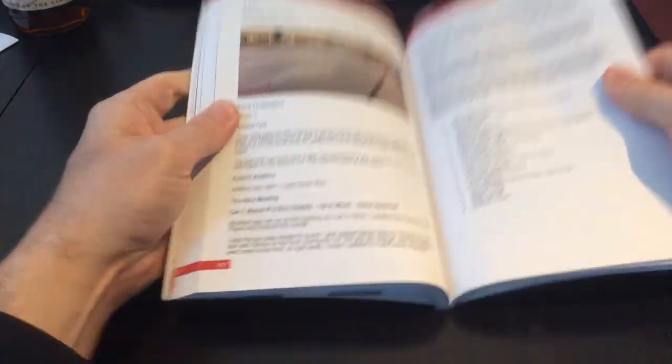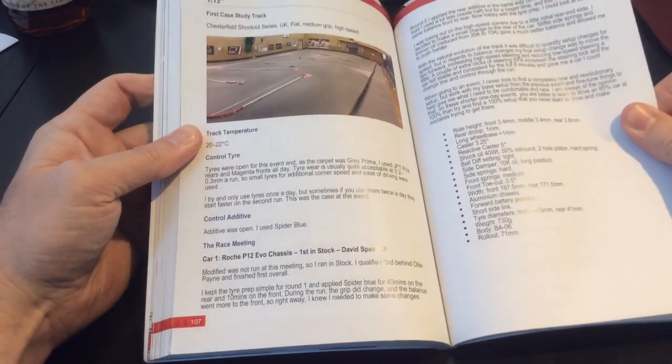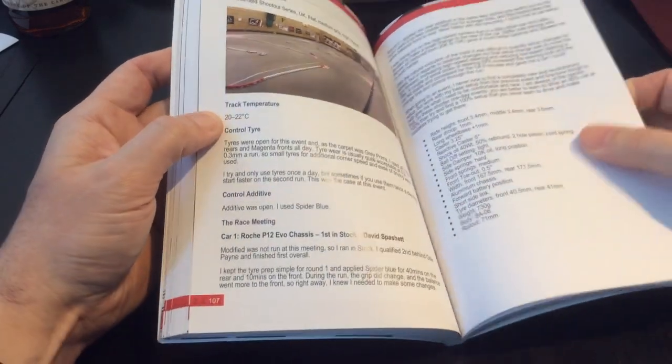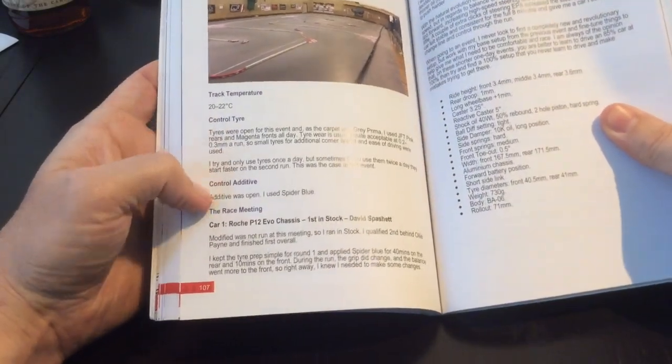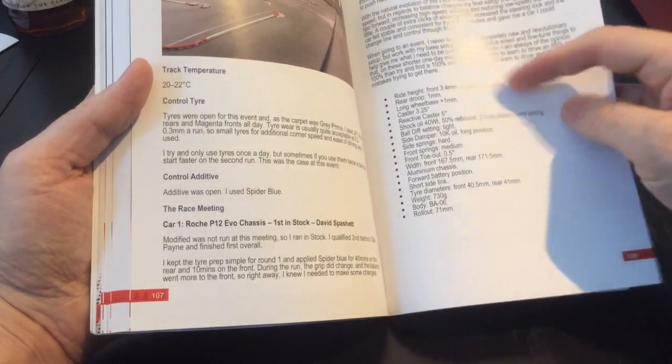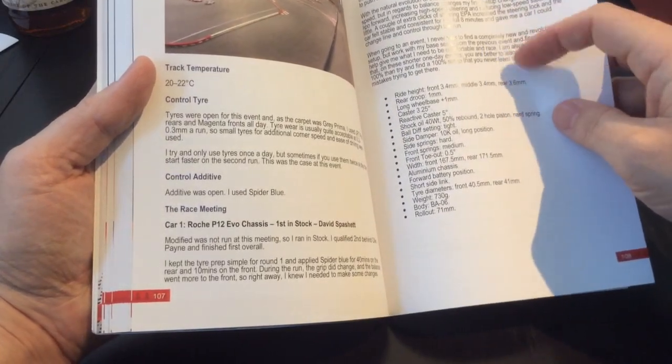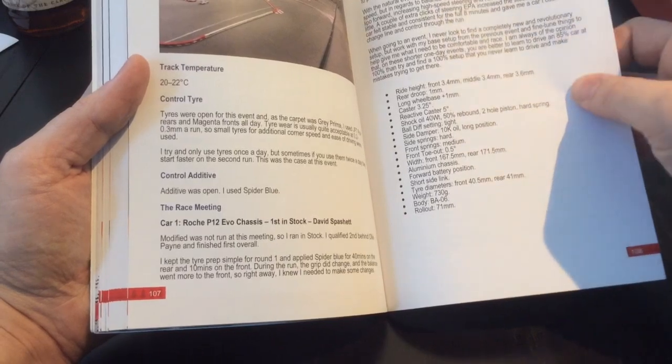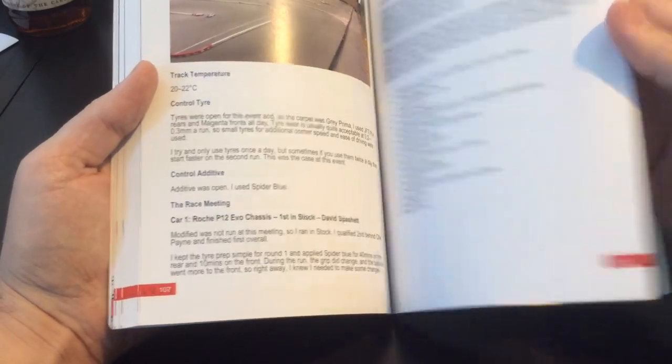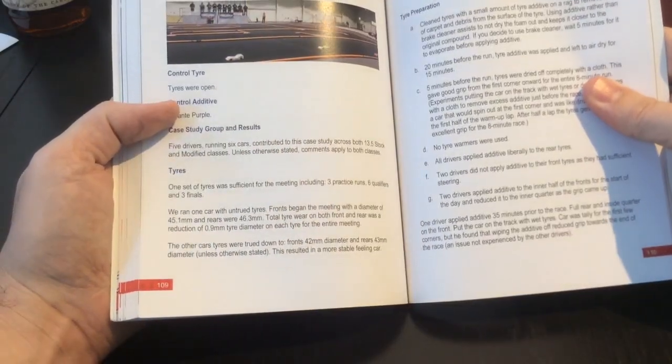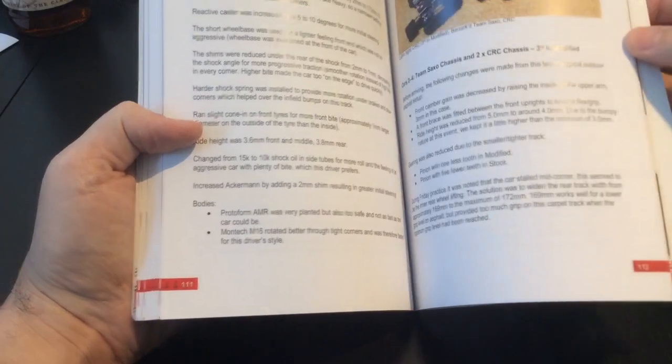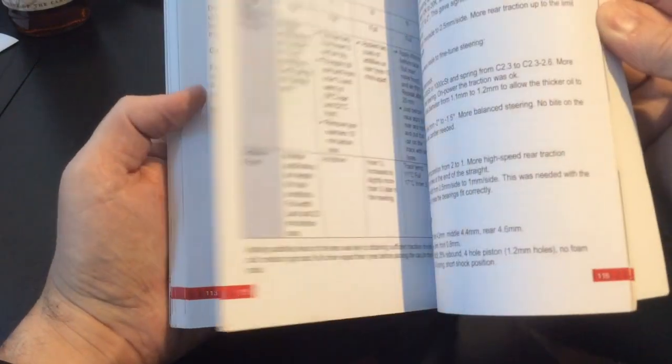Speaking of details, we have the first case study. Track, you have the carpet, gives you the track temperature, the control tire, the additive, what chassis was being used. There's even detailed setup information, even goes into the steering EPA and just other little details that will help improve the car to drive around the track well. There's lots of case studies, a lot of carpet case studies.